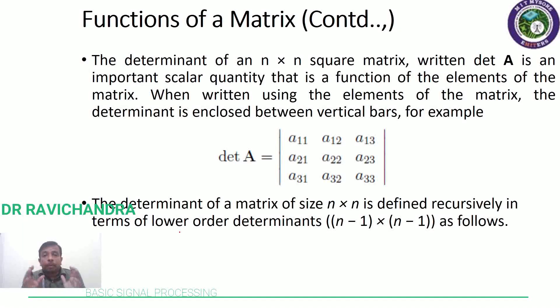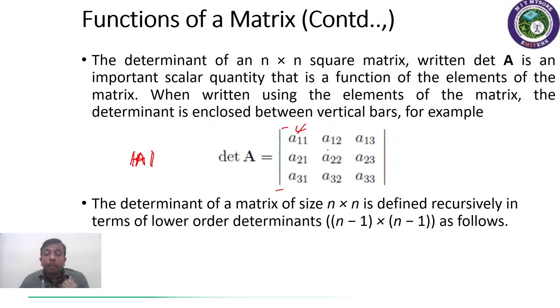Another important point in matrix is a determinant. Determinant of an n cross n square matrix is written as det A or it is also common to use the notation of the matrix in between two parallel lines, which is called as determinant A. These are the elements - please note instead of square brackets, two straight lines are used which denote it as determinant.